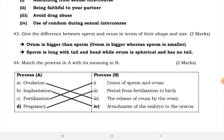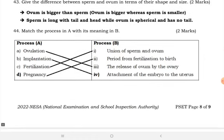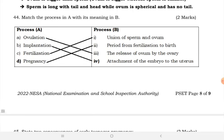Give the difference between sperm and ovum in terms of shape and size. Ovum is bigger than sperm; sperm is smaller. Sperm is longer with a tail and head, while ovum is spherical and has no tail. Match the following terms: ovulation — the release of ovum by the ovary; implantation — attachment of the embryo to the uterus; fertilization — a union of sperm and ovum; gestation period — from fertilization to birth.